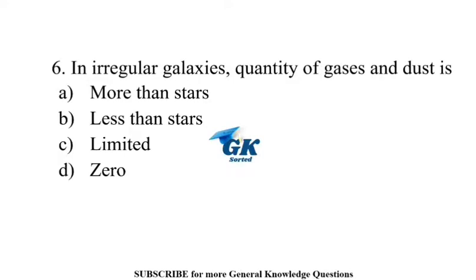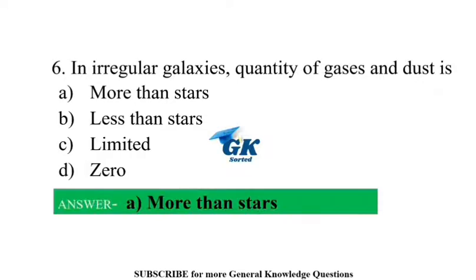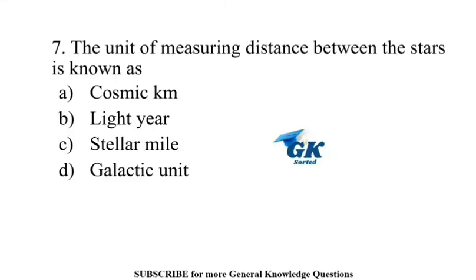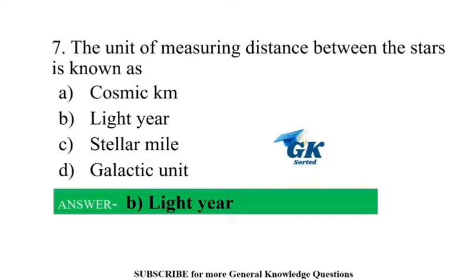In irregular galaxies, the quantity of gases and dust is more than stars. The unit of measuring distance between the stars is known as Lightyear.